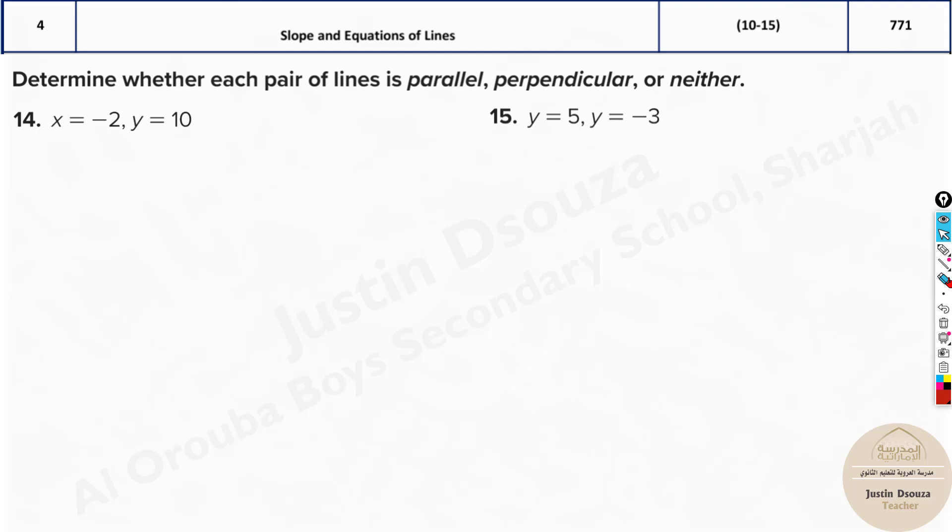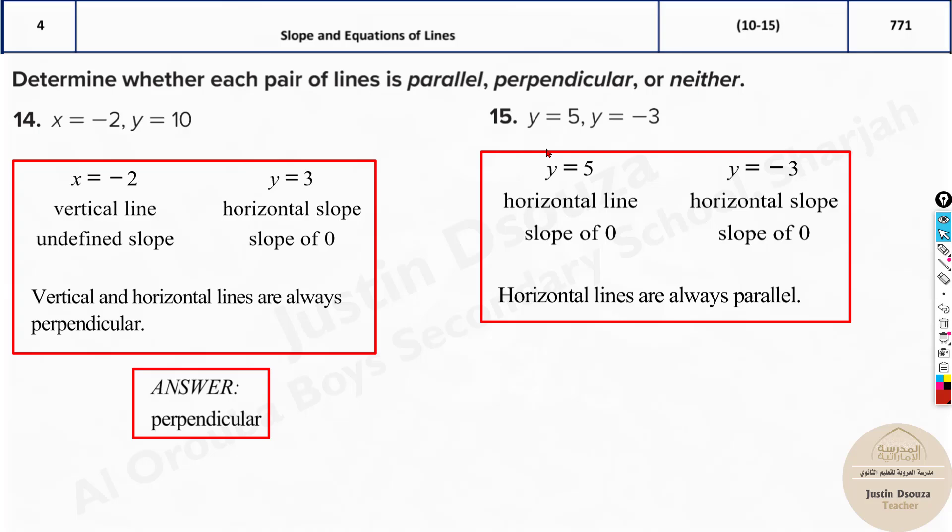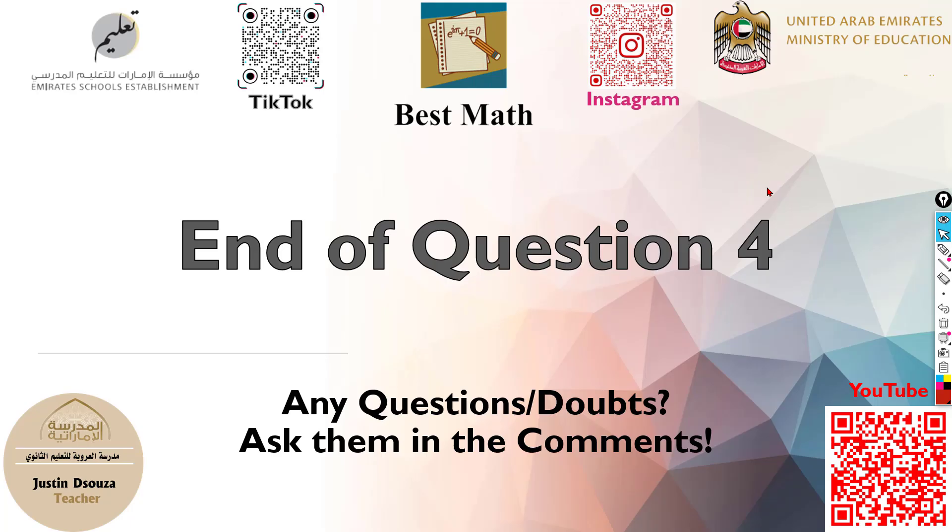So perpendicular when there are two different terms (x and y), parallel when they're the same term. That's the end of question 4. I hope it's clear. It's a simple topic. Just be careful with the slopes. Find the slopes, analyze them, and then easily find the answer.